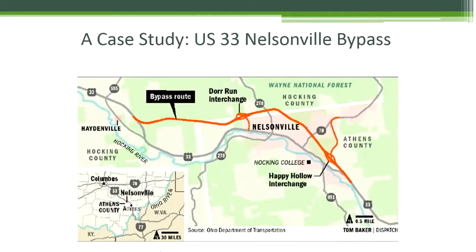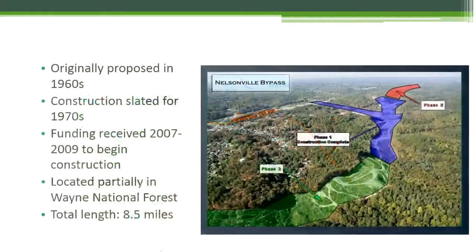We'll use the US-33 Nelsonville bypass as a case study to demonstrate how we can protect all species, especially endangered species, during land development. The Nelsonville bypass was originally proposed in the 1960s, but the 1970s oil and gas embargo halted construction. The project was revived in the 2000s and funding was received in 2007 to begin construction. The bypass was constructed in three phases and was completed in late 2013.